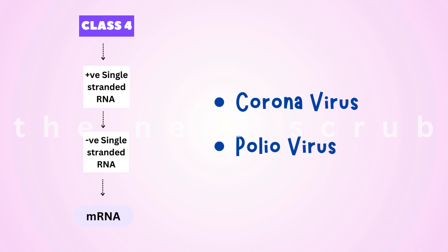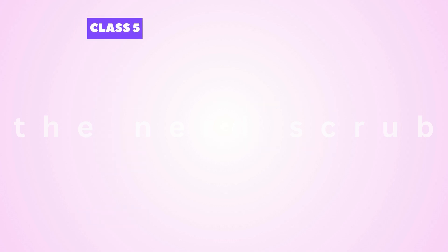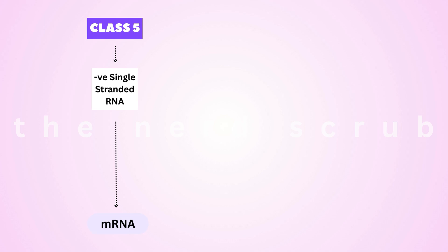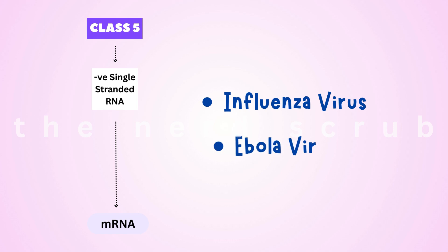Class 5 includes viruses with negative-sense single-stranded RNA genomes. These viruses first transcribe their RNA into positive-sense messenger RNA using RNA-dependent RNA polymerases that are carried by the viruses themselves. Examples include the influenza virus, which causes seasonal flu, and the Ebola virus, known for causing severe fever.